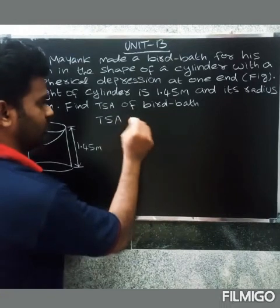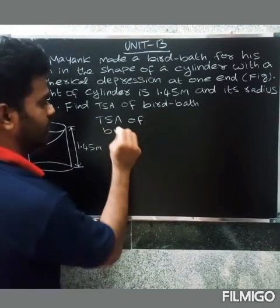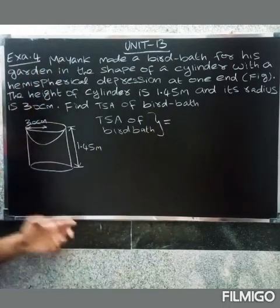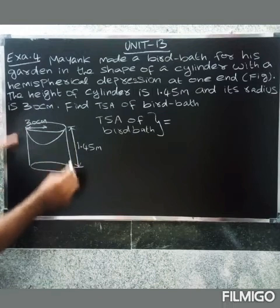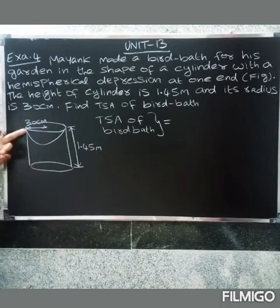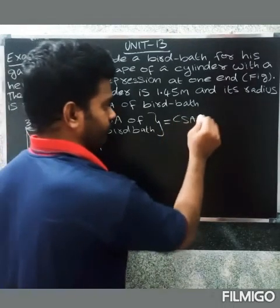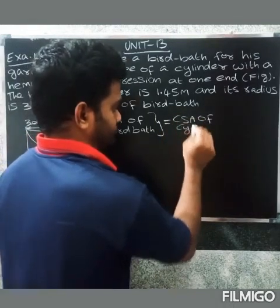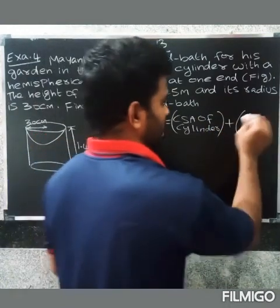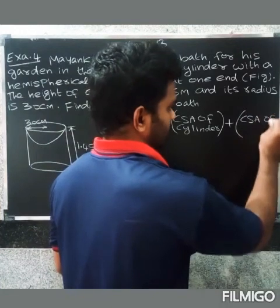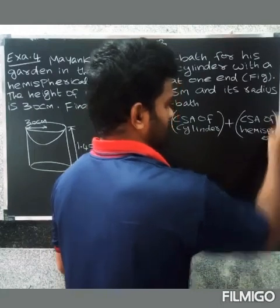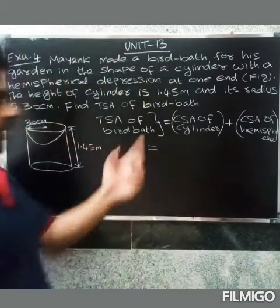Total surface area of bird bath equals - there are two images, so one is the cylinder and one is the curved surface area of hemisphere. So two shapes: first, curved surface area of cylinder plus the second shape, curved surface area of hemisphere.